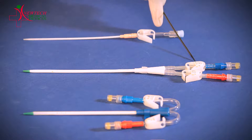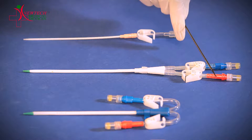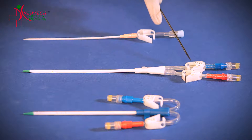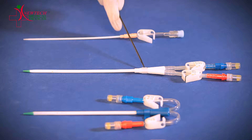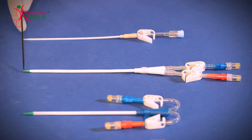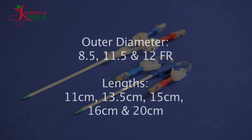This is a double lumen catheter. There are two lumens: the distal end and the proximal end. Sizes available are marked on the clamps. This is the hub. These are the rotatable suture wings. This is the total length of the catheter which gets inserted into the body. This is the tip of the catheter. These are the side holes connected to the proximal end. The double lumen catheter is available in various diameters and lengths.